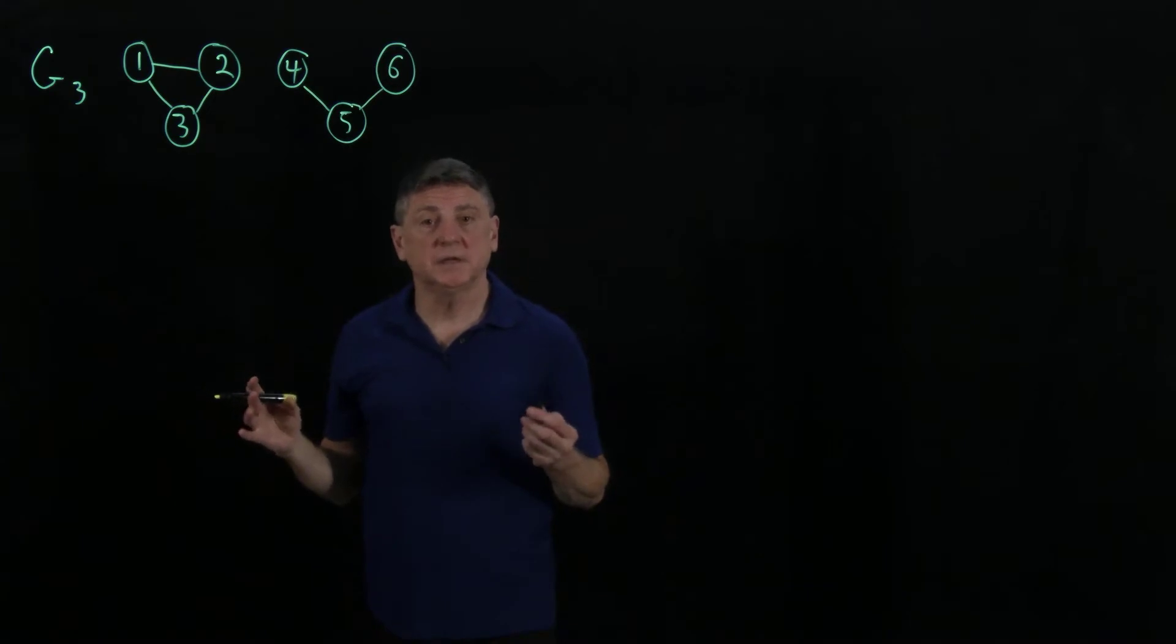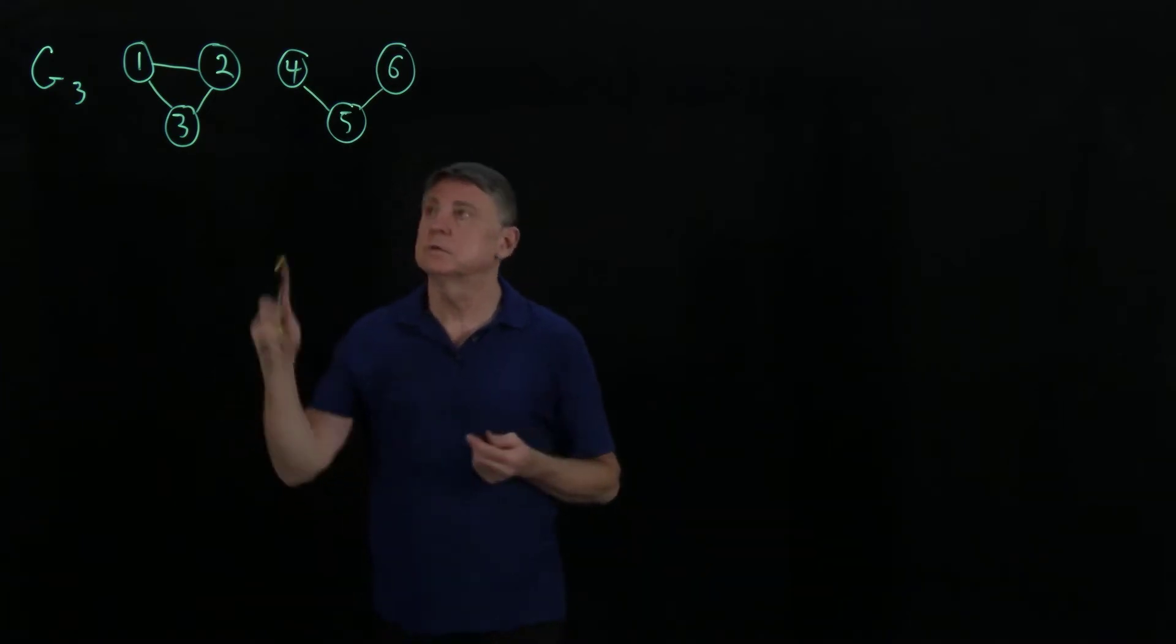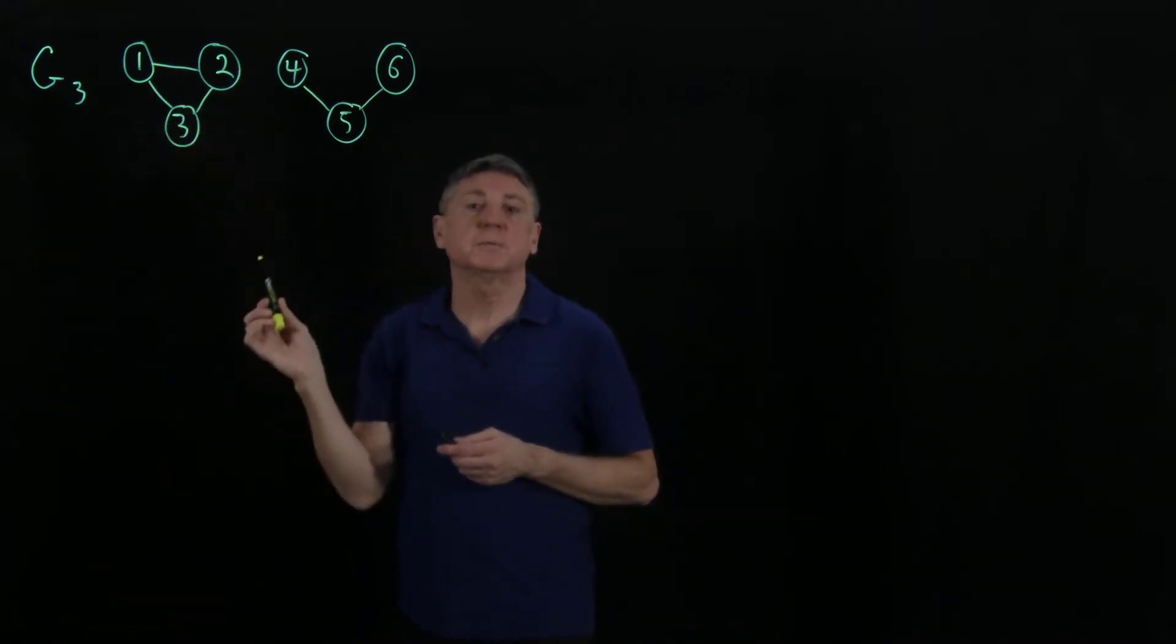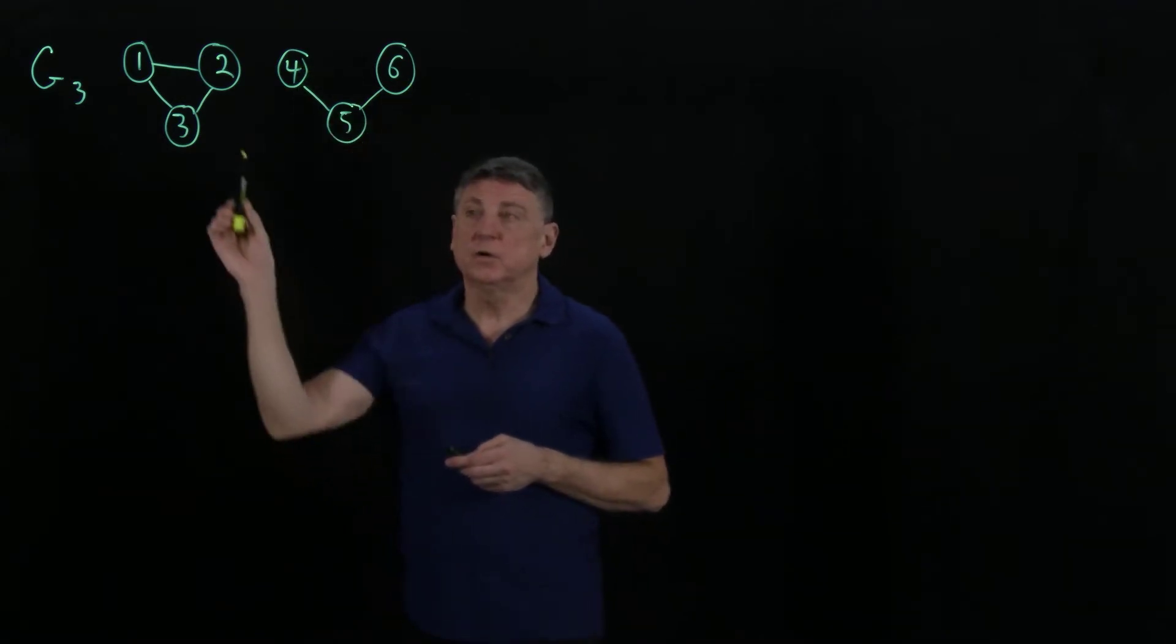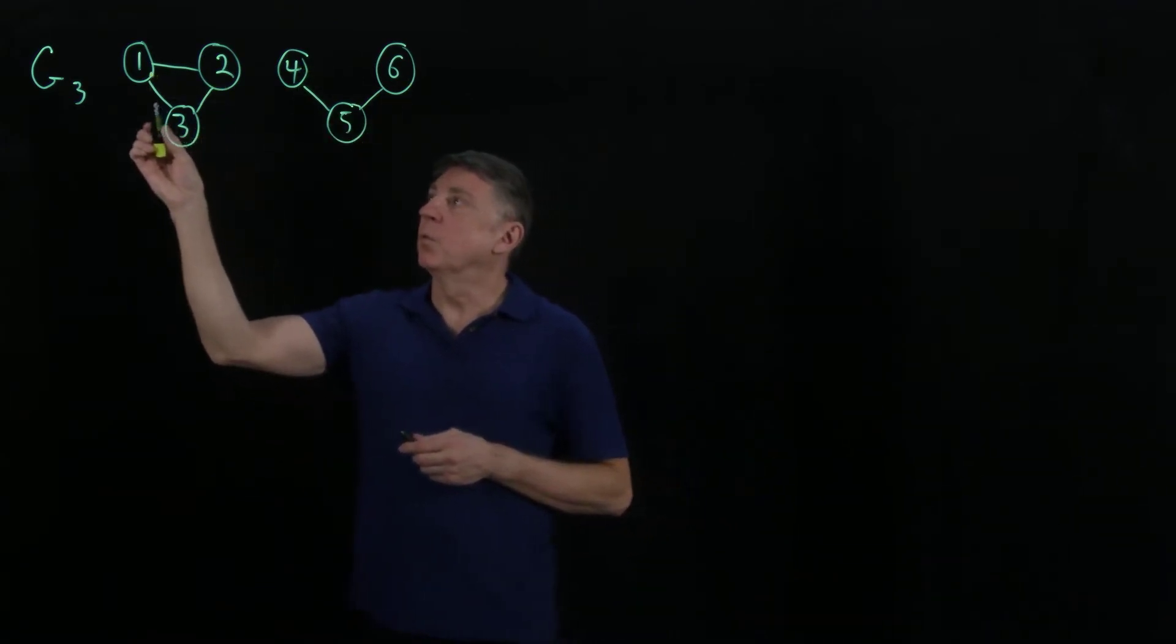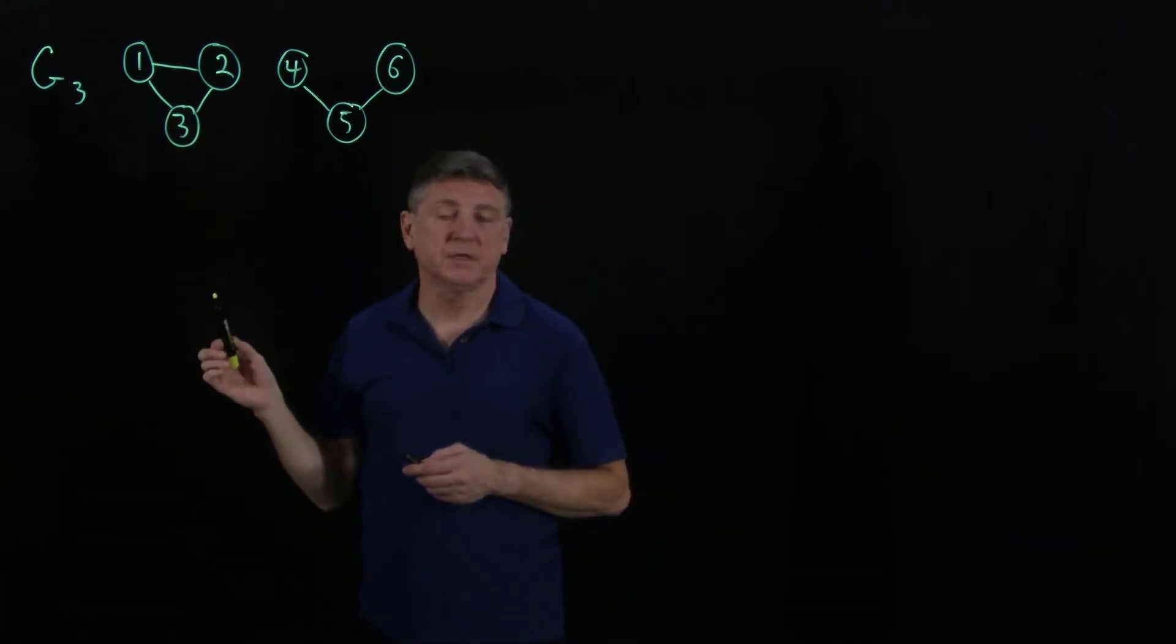We can see immediately that this graph has two components. 1, 2, 3 form a subgraph that is distinct from the 4, 5, 6 subgraph. We can also see that 1, 2, 3 is not bipartite.